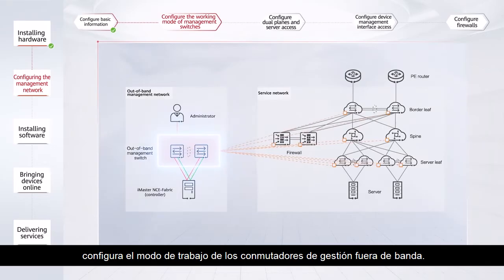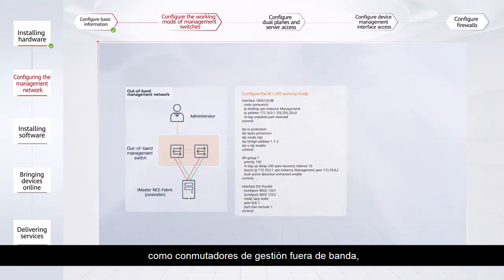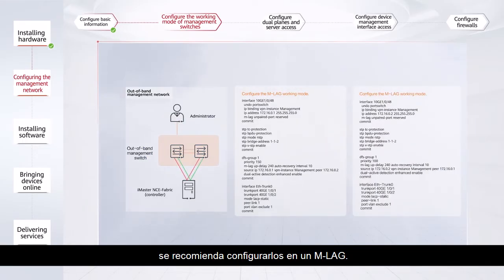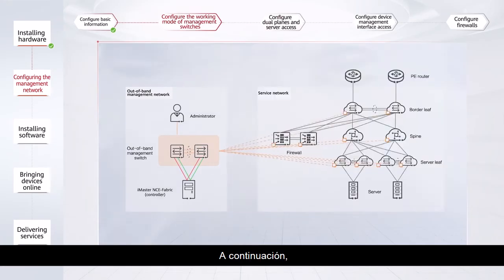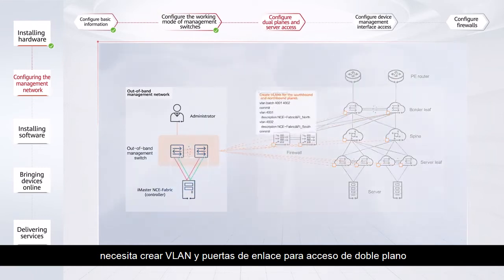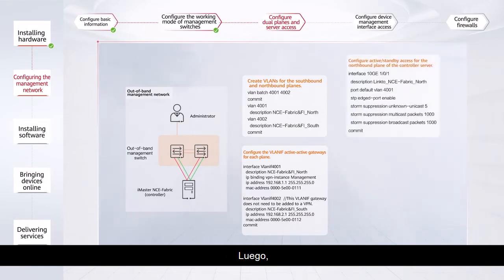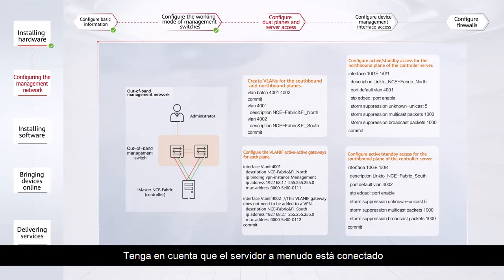Then configure the working mode of the out-of-band management switches. If two Huawei CloudEngine switches function as the out-of-band management switches, you are advised to configure them in an M-LAG. If other switches are used, configure them as required — for example, in a stack. Next, you need to create VLANs and gateways for dual-plane access of iMaster NCE Fabric. Then complete the access configurations for the iMaster NCE Fabric server. Note that the server is often connected in active-standby bonding mode.